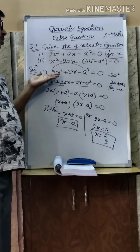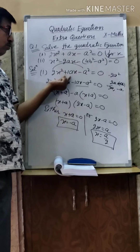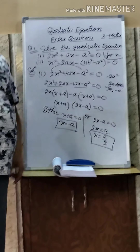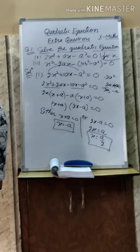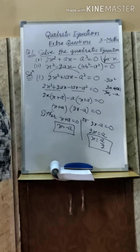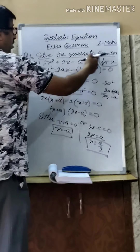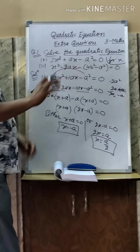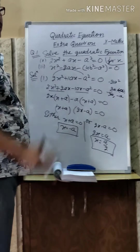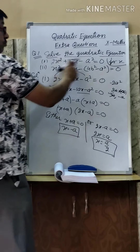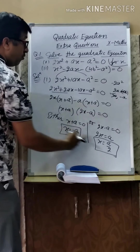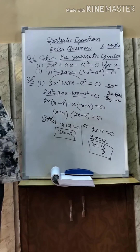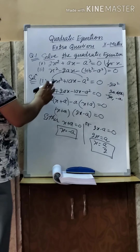If in the exam you don't know how to factorize, then you can solve by the D method — that is, solve by using the quadratic formula. But it is not mentioned here which method to use; it only says solve the quadratic equation. You can solve by any method. So you just have to find the value of X. If you have any doubt, then ask.